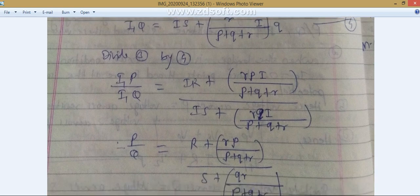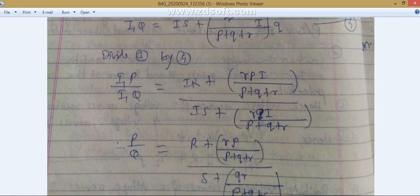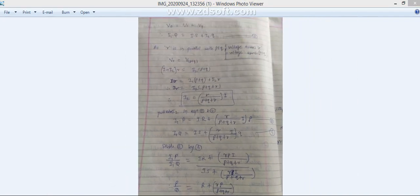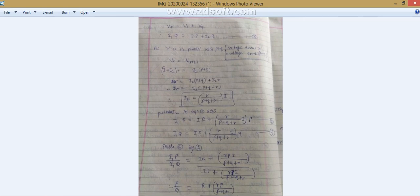P upon Q equals R plus in bracket R P upon P plus Q plus R, divided by S plus in bracket Q R upon P plus Q plus R. This is your whole expression. If any difficulty to understand up till this, please ask. So shall I continue? Next semester.